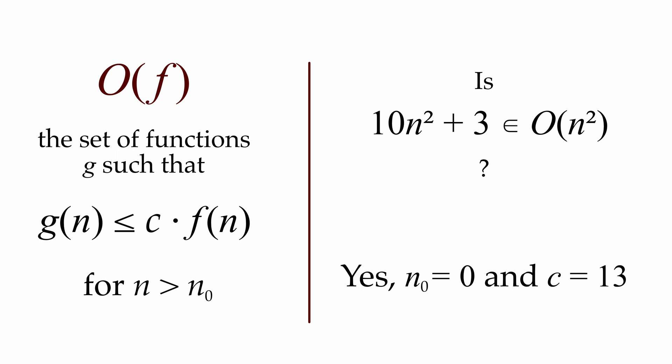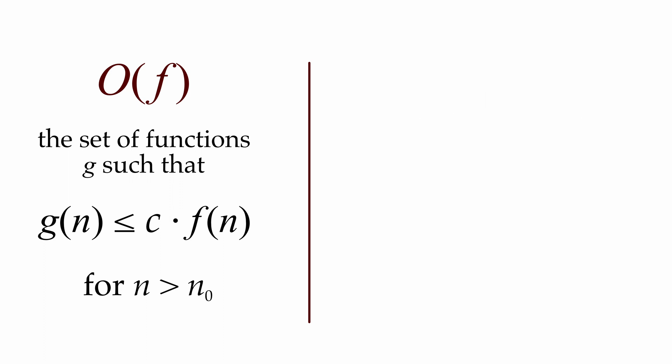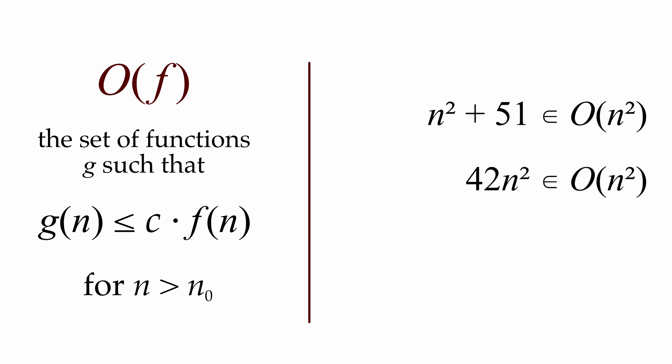Big O ends up being useful to us because it groups together entire classes of functions that have similar growth rates. For example, adding a constant to a function doesn't change its big O classification. Multiplying a function by a constant doesn't change its big O classification either. And for polynomial functions, lower degree terms and constants don't affect the big O classification — so even with a polynomial with many terms, we focus on just the highest degree term and ignore the constants.